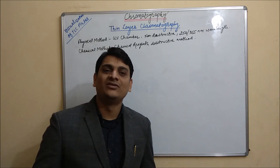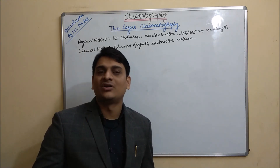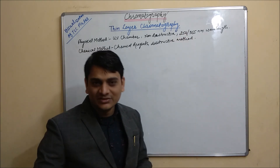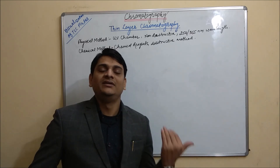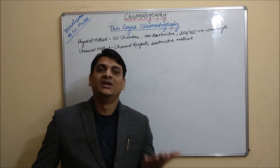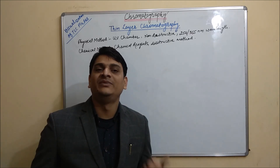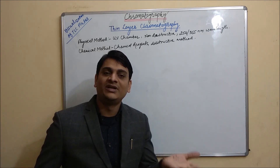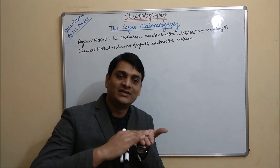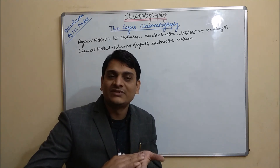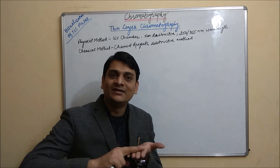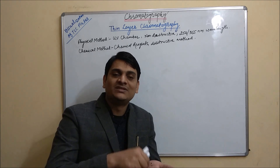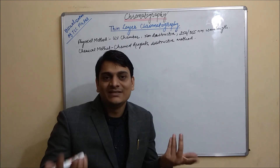Most of the aromatic compounds give prominent absorbance at 254nm, that is why we are using 254nm. Apart from that, in TLC generally we are using silica gel GF254 as an adsorbent. At 254nm, that silica gel stationary phase gives a green fluorescence background, and against that green fluorescence background all the compounds give dark spots, which can be easily observed.